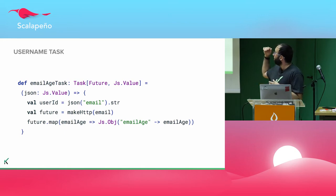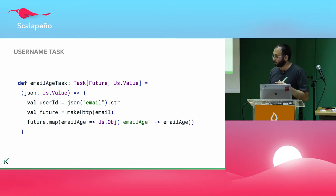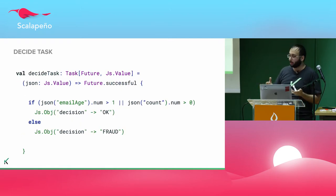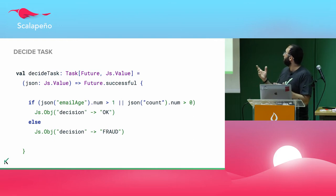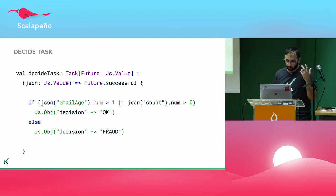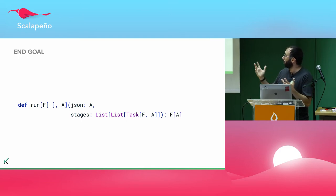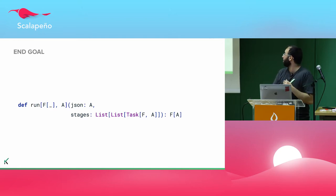The decision task — whether it's fraud or not — is very similar: extract the values produced by the previous two tasks from the JSON and make a decision. That's the signature of our library: it takes an initial JSON and stages of tasks to run, and needs to return the result wrapped in the effect. The stages are a list of lists — the inner lists are the stages and the outer list is the whole computation.